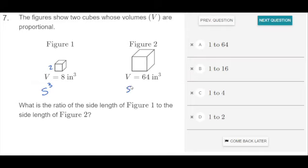Similarly for Figure 2, since it's a cube, the volume is the side length raised to the third power. So what number times itself 3 times gets us 64? That number is 4.